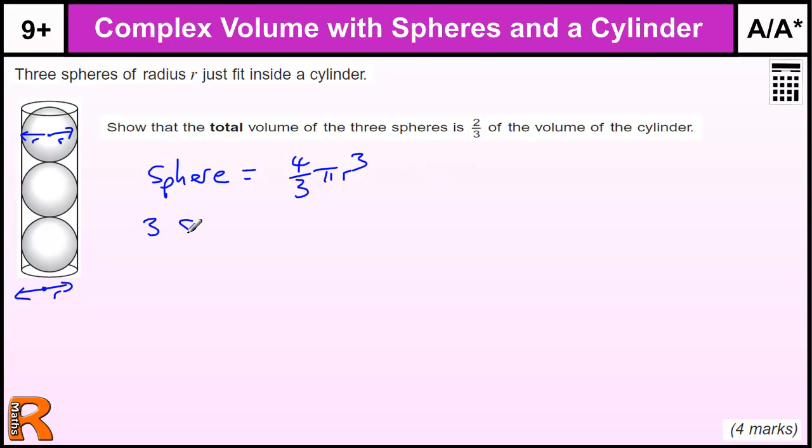So three spheres is going to be three times four-thirds pi R cubed. That would get you one mark on an exam just for writing that. That simplifies to four pi R cubed because the threes cancel. Three times something divided by three is just that something left on its own.